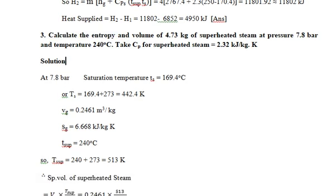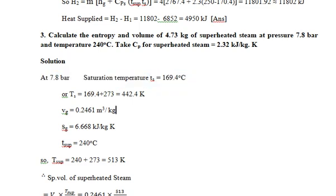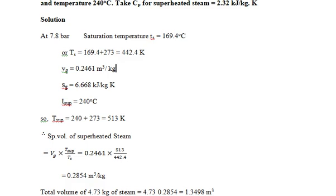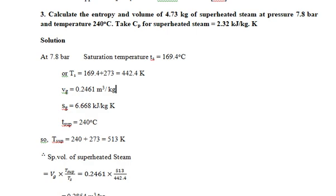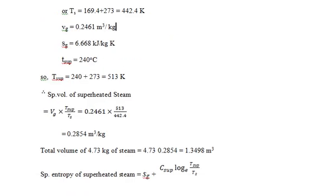Go to the steam table at 7.8 bar to find the required values. Then, at 250 degrees Celsius, apply the formula for specific volume of superheated steam: v_sup = vg × (T_sup / T_sat). Substituting values, you get v_sup = 0.254 m³/kg. For 4.73 kg of steam, multiply: 4.73 × 0.254 = 1.3498 m³. This is the total volume of 4.73 kg of superheated steam.